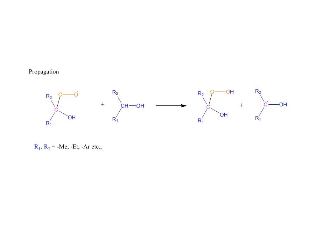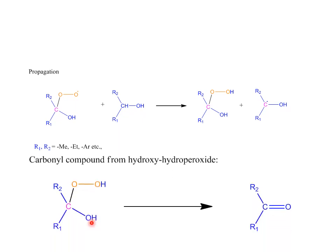In Step 3 (propagation), the hydroxyl peroxy radical abstracts a hydrogen radical from another molecule of secondary alcohol, producing the corresponding hydroxyl carbon radical. The hydroxyl peroxy radical forms hydroxyl hydroperoxide as a product. This hydroxyl hydroperoxide then undergoes elimination — since hydrogen peroxide is a better leaving group — to yield the corresponding carbonyl compound, confirming this is an oxidation reaction.